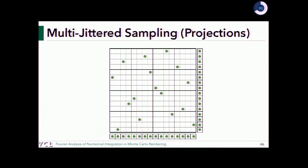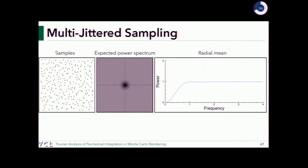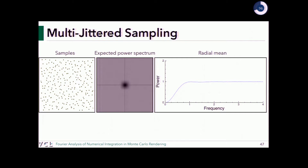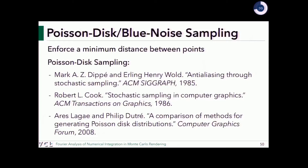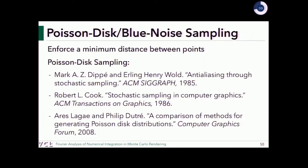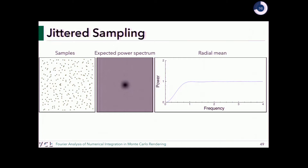With multi-jittered sampling you shuffle x-coordinates and y-coordinates after generating stratified samples. The result is fairly evenly distributed in 2D and the power spectrum is quite good — multi-jittered is almost as good as jittered alone in terms of the spectrum.